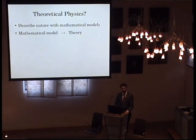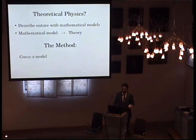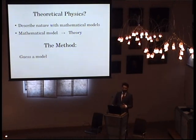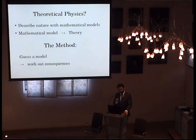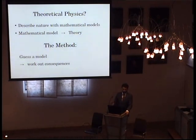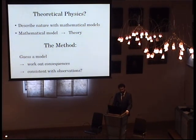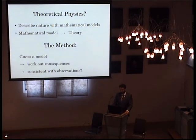So how do we get from a mathematical model to a theory? The method is as follows. You sort of guess what a model is — it's an educated guess. That's really where the clever physicists are more successful than the not so clever ones. Then the hard work goes into the next step, namely working out the consequences of this model — what follows if you assume this? That's really where 90% of the work goes in theoretical physics. And then you check whether these consequences are consistent with observations.